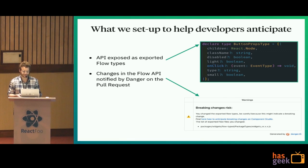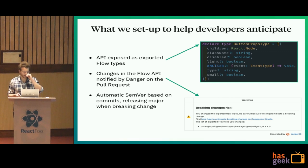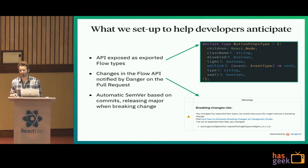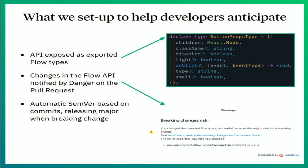If they didn't pay attention, their pull request — thanks to Danger running in the CI — will directly tell them they changed a Flow API file, and that it might mean a breaking change. There is also automatic semantic versioning based on commits. When the developer knows he's making a breaking change, he can indicate it at the commit level, creating a major version bump directly — so people know that a major bump means a potential breaking change. And automatically, a changelog is generated from the commits using Commitizen.